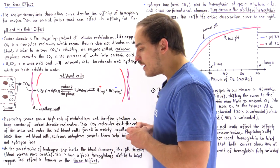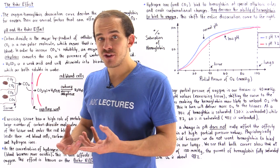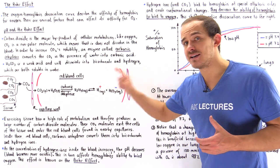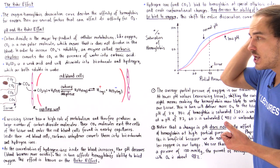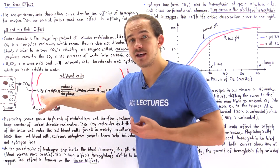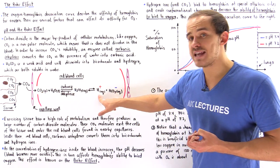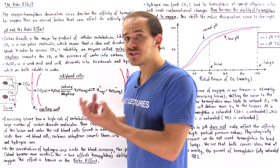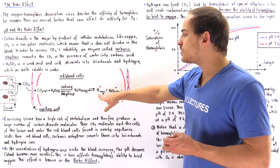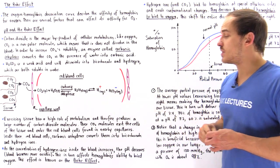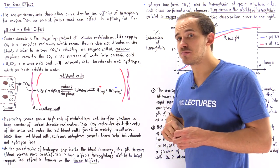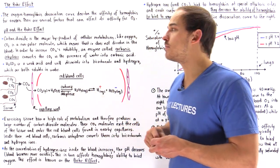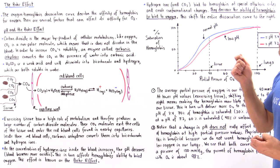What determines the pH of our blood plasma is the concentration of H+ ions inside it. So the more carbon dioxide molecules we have in the blood plasma, the more H+ ions we will have. When tissue is exercising, it produces more CO2 molecules, which ultimately produces more H+ ions. Because we have a higher concentration of H+ ions, that makes our blood plasma more acidic, thereby lowering the pH. This effect is known as the Bohr effect.